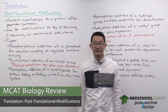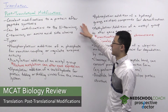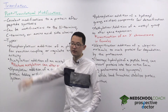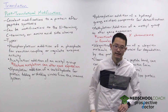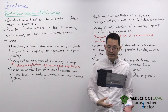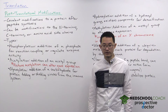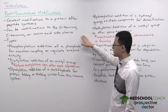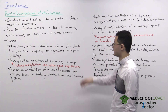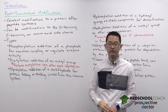In this video we're going to go over post-translational modifications. Post-translational modifications are covalent modifications to a protein after peptide synthesis. These are covalent modifications meaning that we are breaking or forming chemical bonds — this is not looking at intermolecular forces. These modifications can occur along many places in a protein including the N-terminus, the C-terminus, or the side chains of the amino acids.